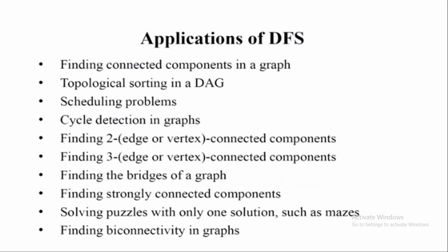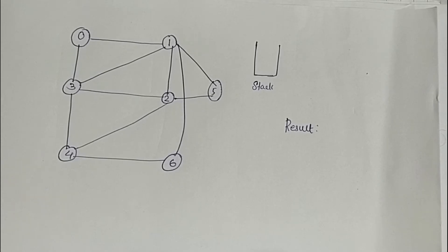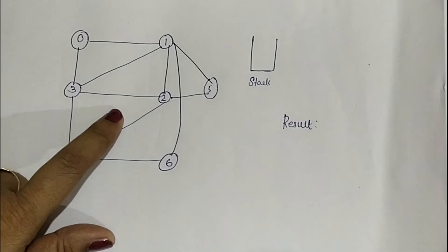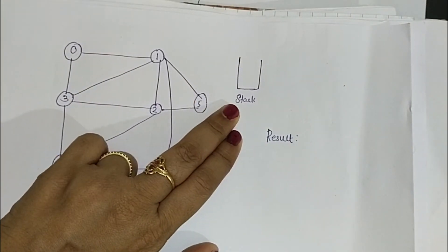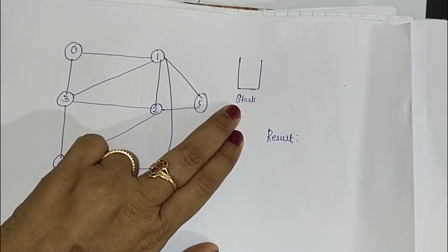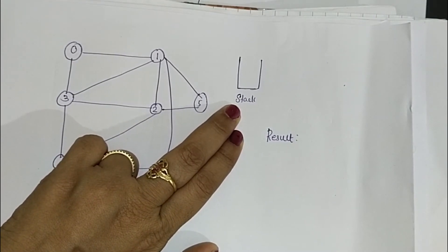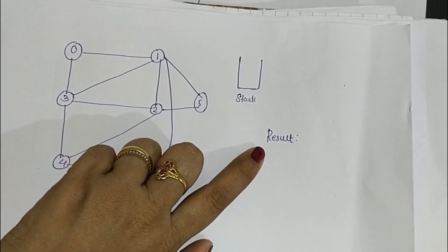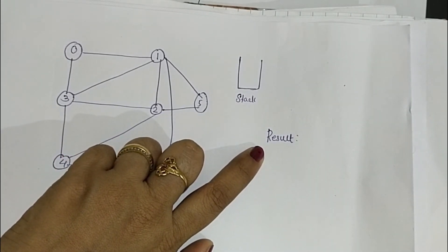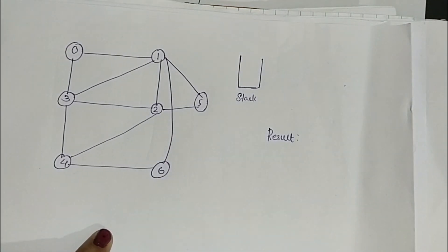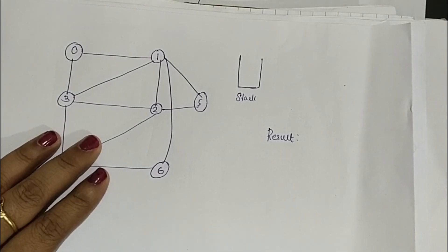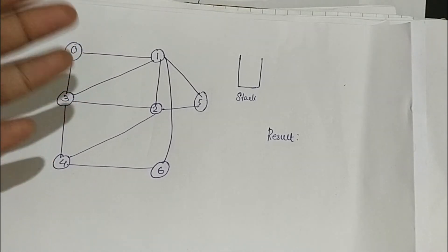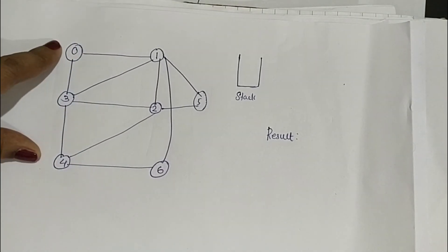Next we will discuss a numerical example on DFS. We are going to find the DFS traversal of this graph. In the earlier video on BFS, we used a queue, but here we are using a stack. The stack operates in LIFO — last in first out — manner. We will also have a result part to print the traversal. We can take any node as the starting node; there is no restriction. For now, I am going to take node 0.